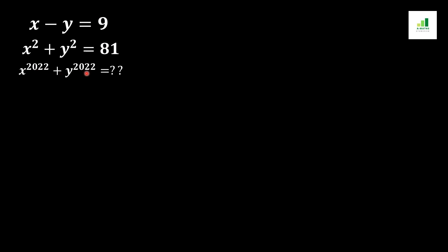In order to solve these equations, I am representing x minus y equals 9 as equation 1, x squared plus y squared equals 81 as equation 2, and x to the power 2022 plus y to the power 2022 as equation 3.